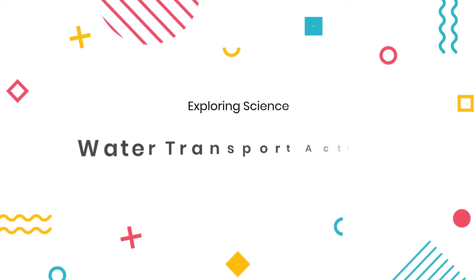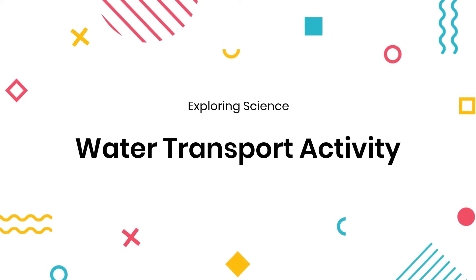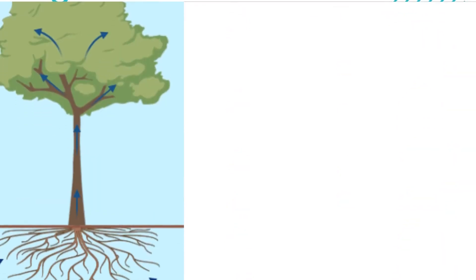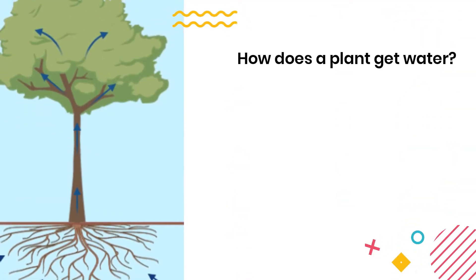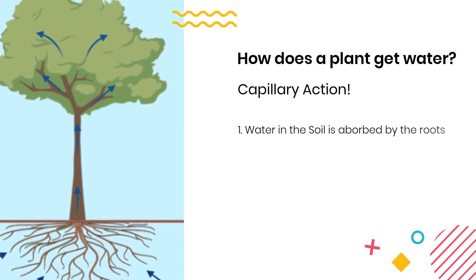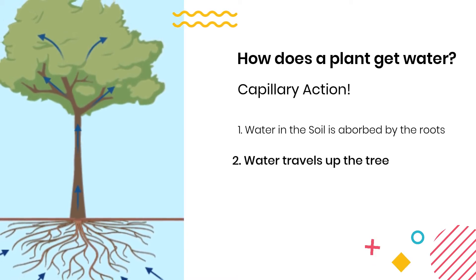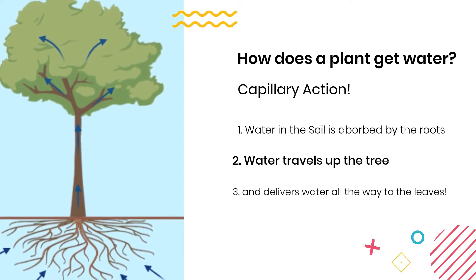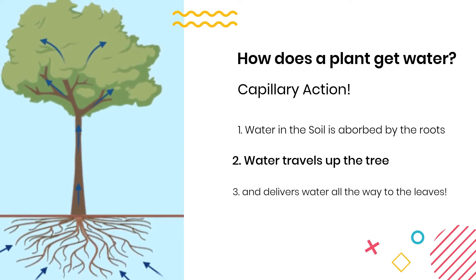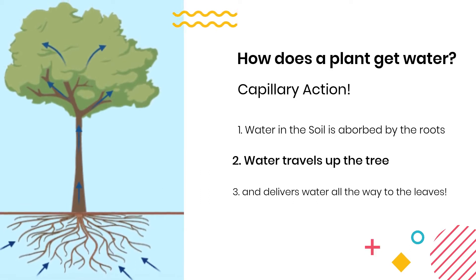Welcome to Exploring Science. In this activity we will demonstrate how water is transported through a plant. So how does a plant get water? First, water is absorbed by the roots, then it travels up the tree — in this example — and eventually makes it all the way to the leaves. This process is called capillary action.